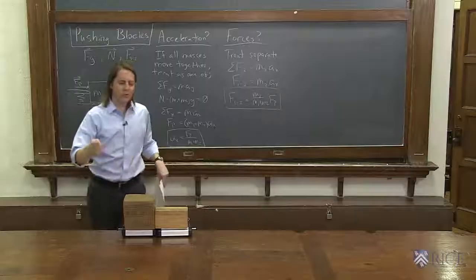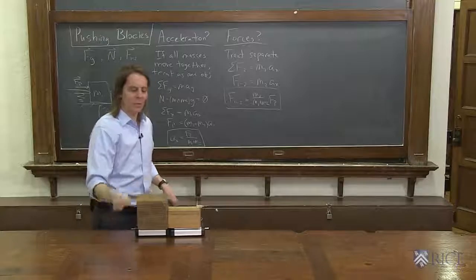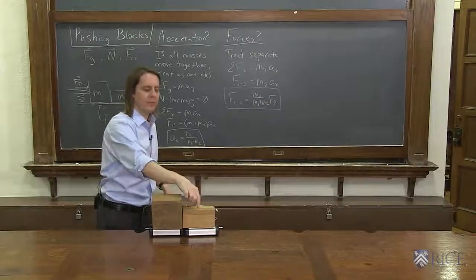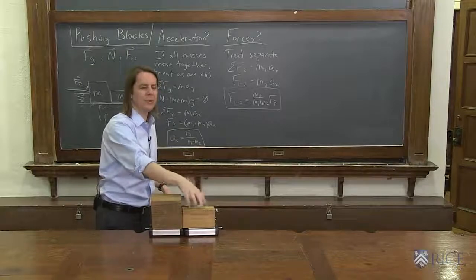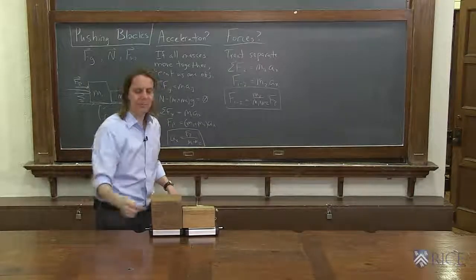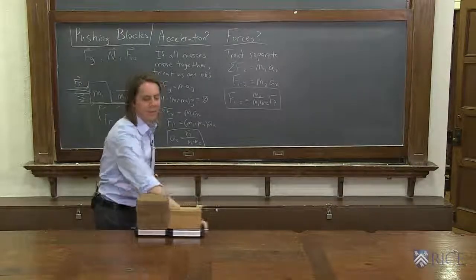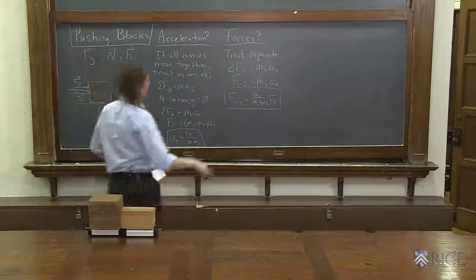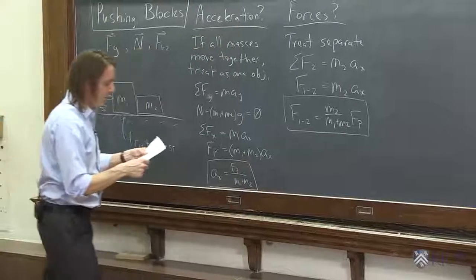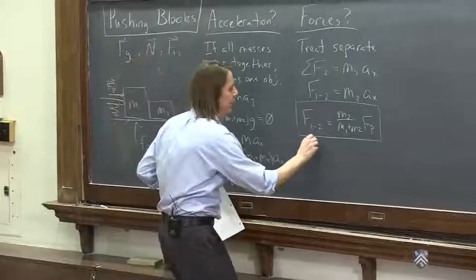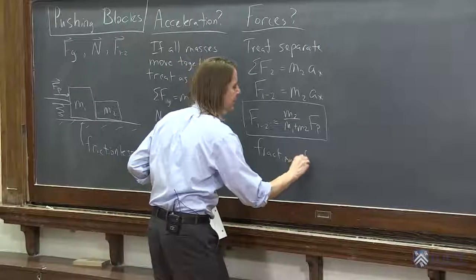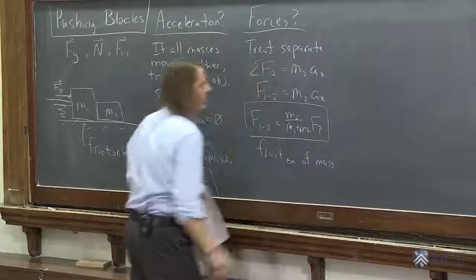The force that this block pushes on this block is really just a fraction of the total mass. This force, sorry, the mass 2 gets its fraction of the total mass, fraction of the force. If we had to divide Fp up, they divide it up by their masses. That's M2's fraction of the total mass. Very exciting. All right, so the fraction of the mass guides the answer.